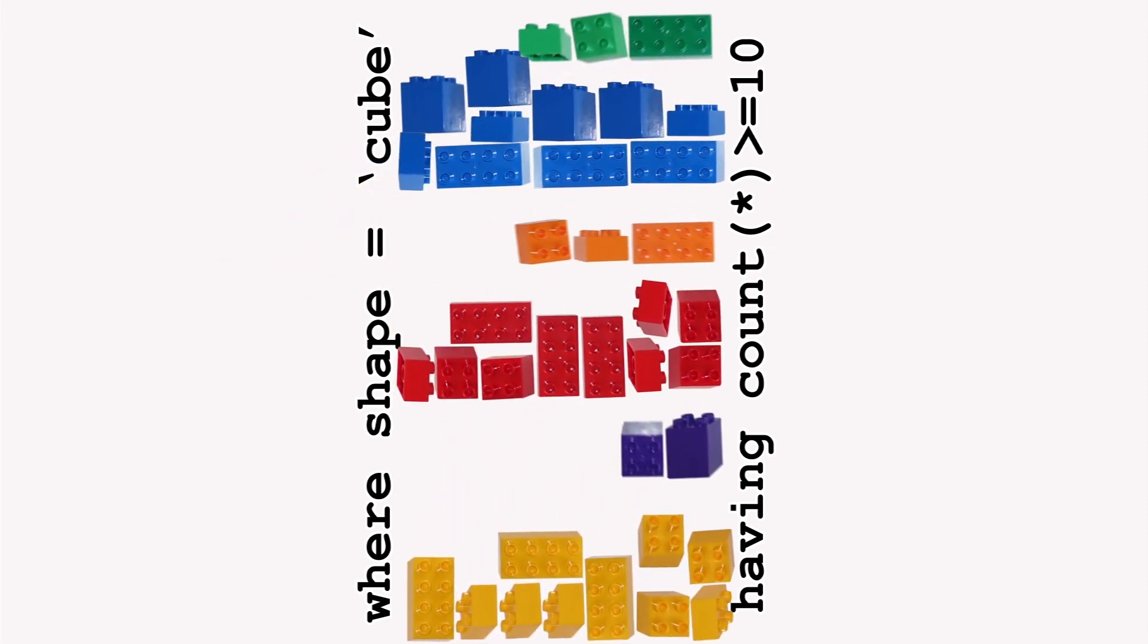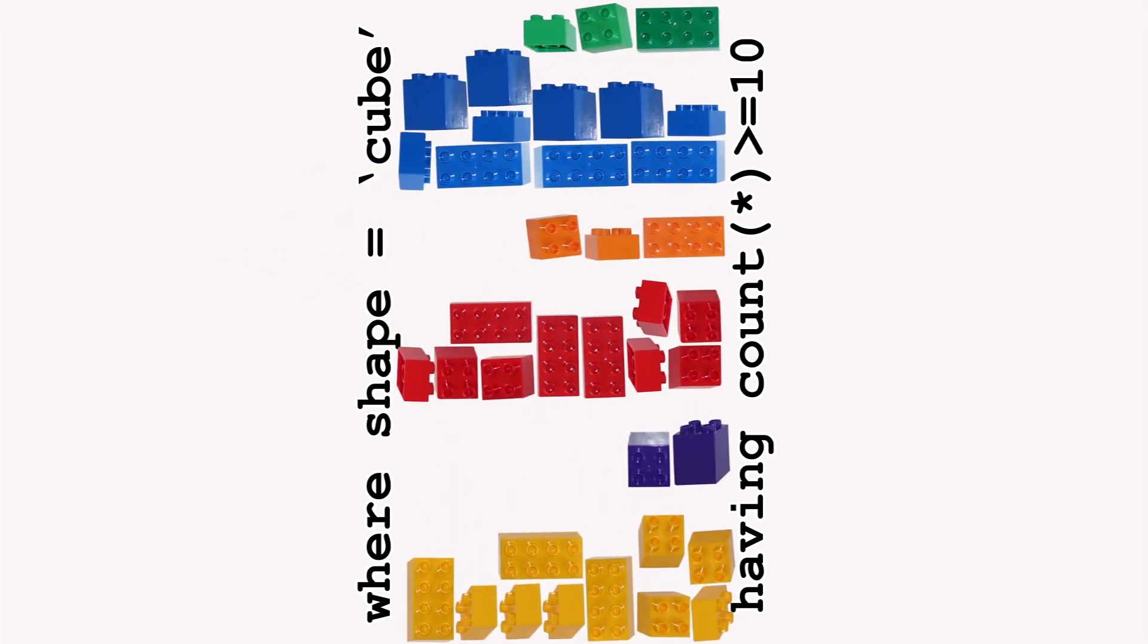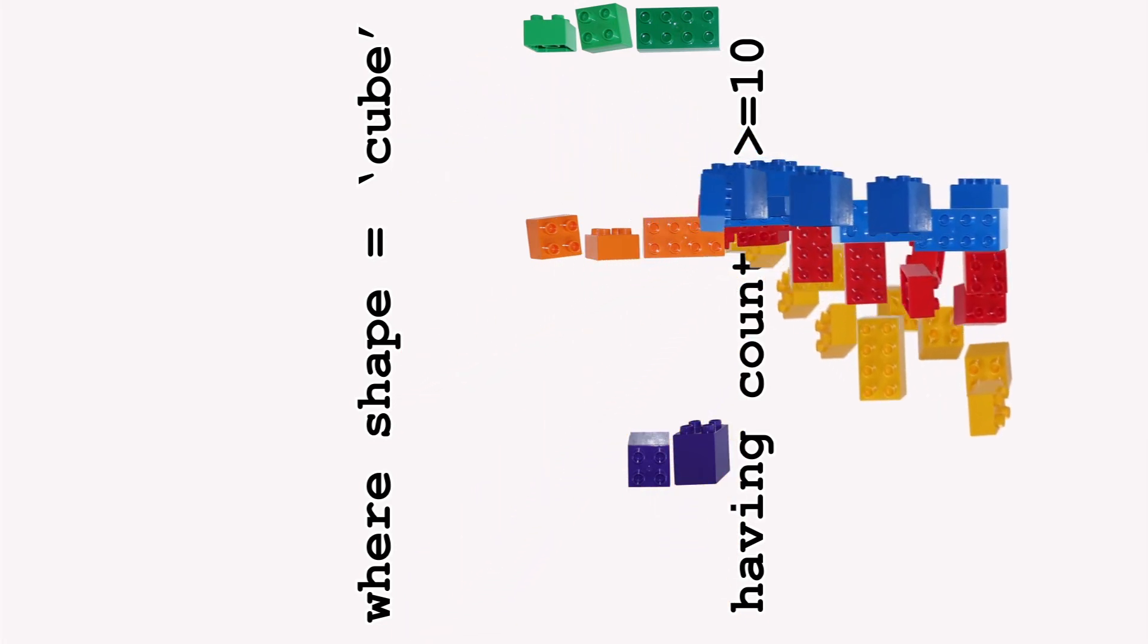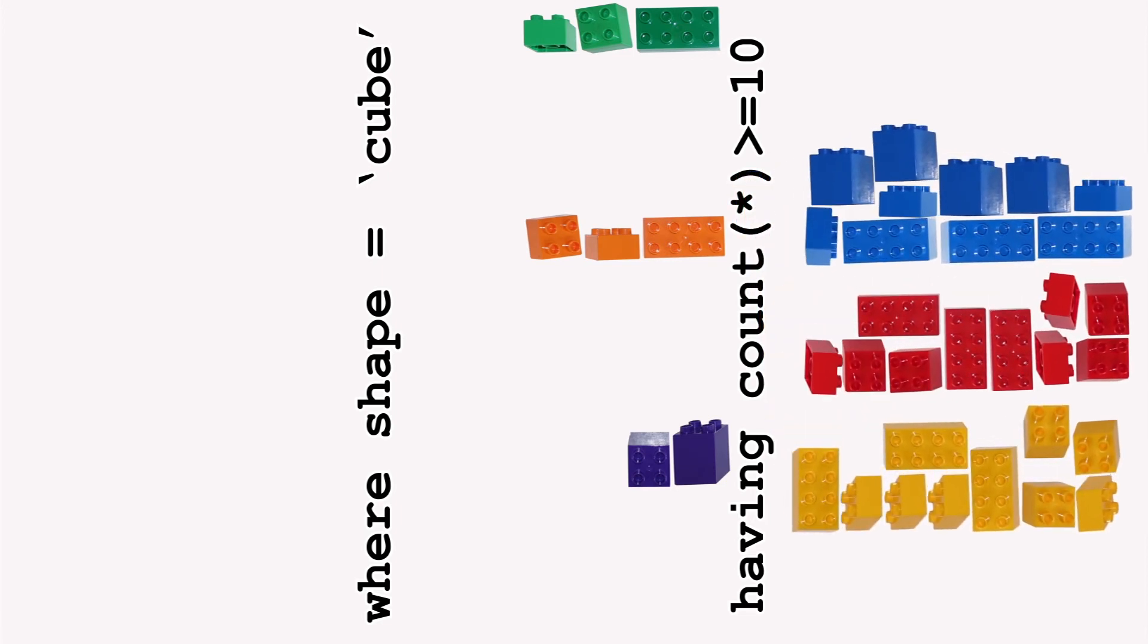What you need to use instead is the having clause. This filters the data using the result of your aggregate functions. So to see which colors you've got enough of add having count star greater than or equal to 10.